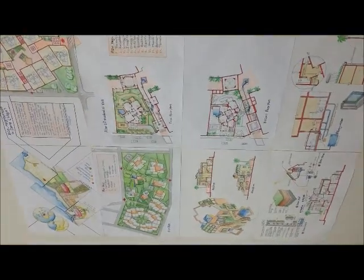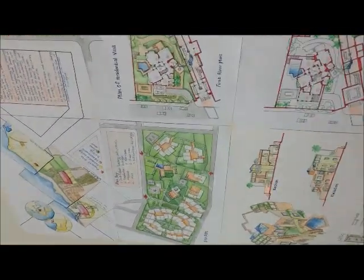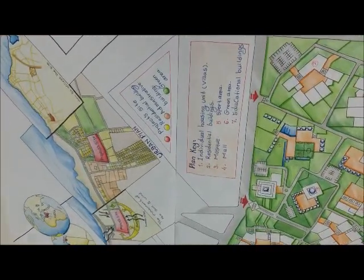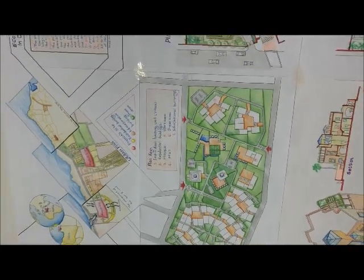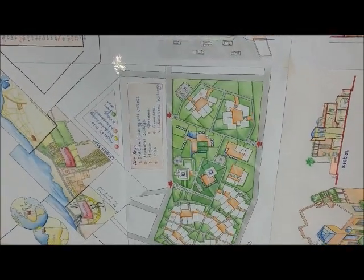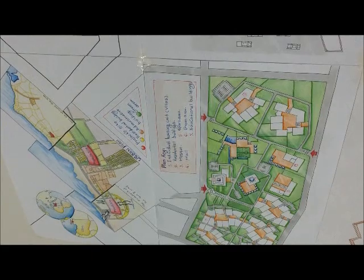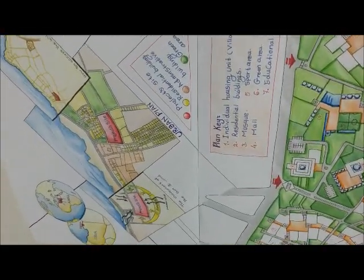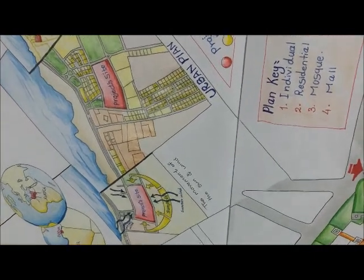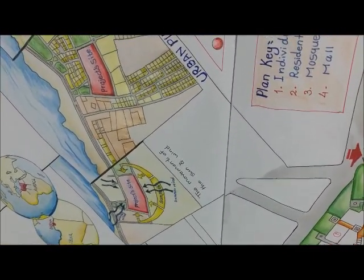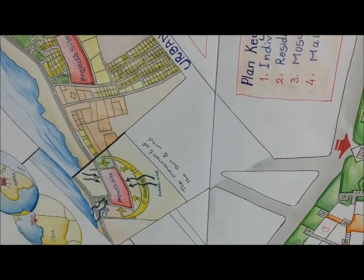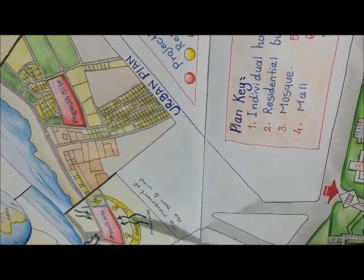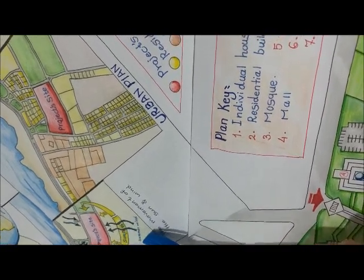This is my project — the eco-neighborhood. This project is a sustainable and eco-friendly project. The project location is in Darna, near the sea. Here is the sun analysis — it comes from east to west. And this is the direction of wind movement: here in the winter, and here the wind in the summer.